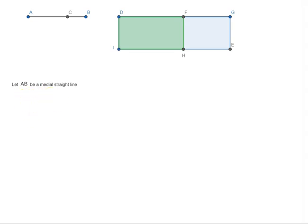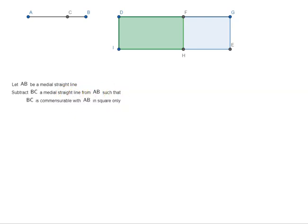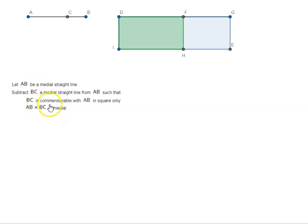Let AB be a medial straight line. Subtract BC, a medial straight line, from AB such that BC is commensurable with AB in square only, and AB by BC is medial. If this is the setup, then the proposition says that AC is irrational.